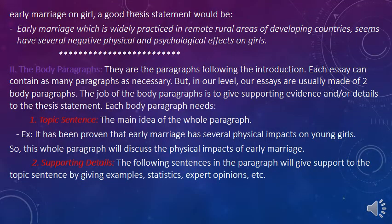For example, if the essay is about the effects of early marriage on girls, a good thesis statement would be: 'Early marriage, which is widely practiced in remote rural areas of developing countries, seems to have several negative physical and psychological effects on girls.' From this thesis statement, we can tell that the two body paragraphs are going to be about the physical effects and the psychological effects of early marriage.